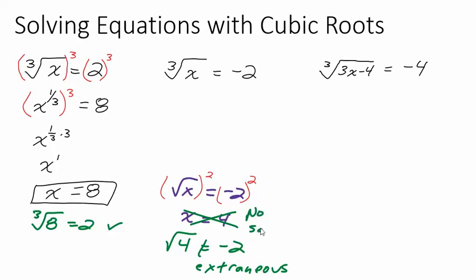With cubed roots, we don't have this problem. Let's see what happens if I cube both sides of this equation. I cube both sides to get rid of the cubed root. So if you have a square root, you square both sides. If you have a cubed root, you cube both sides. And that gives me x equals negative eight. Negative two times negative two times negative two. Well, let's check that.